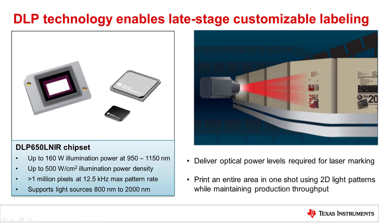Since the switching speed of the micromirrors on the DMD is measured in microseconds, print speeds can often meet production line cycle time requirements even as label design complexity increases.